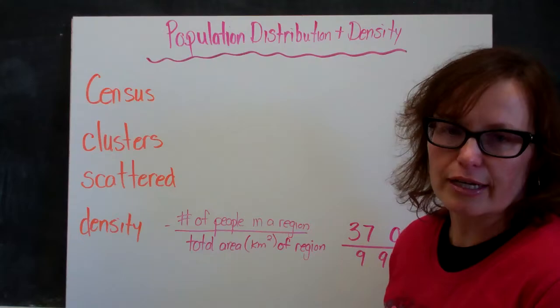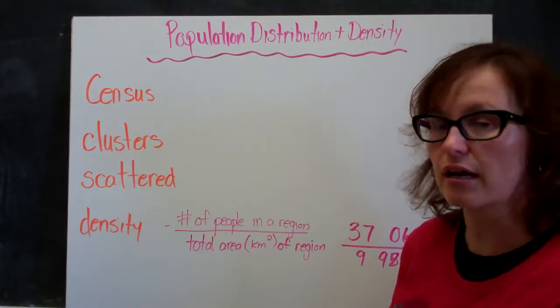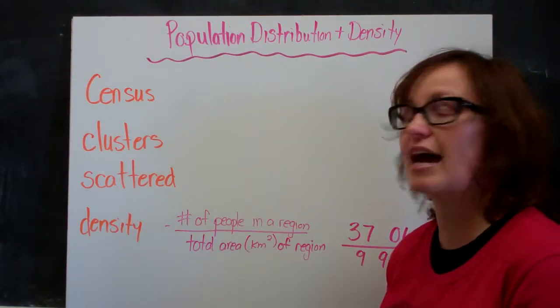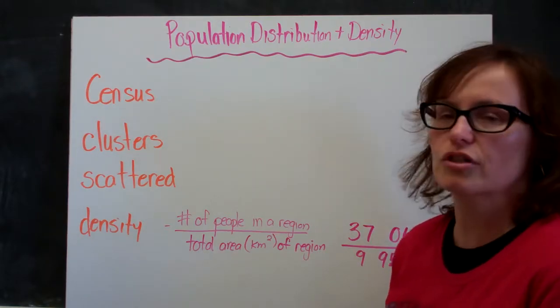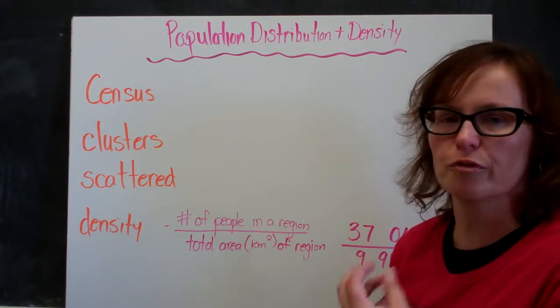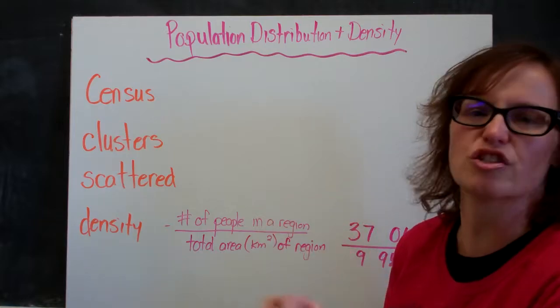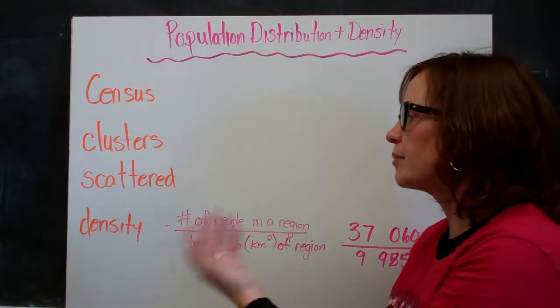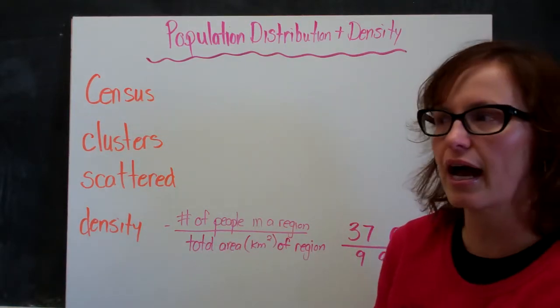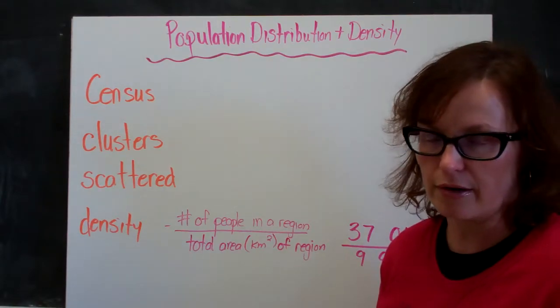Another way that we look at population is we classify it as a clustered community or a scattered community. A cluster is a large number of people living in a small area. The opposite of that is scattered, where you have a small number of people over a large area.